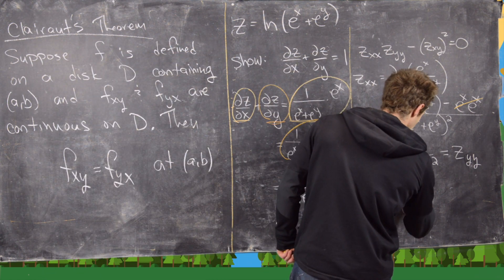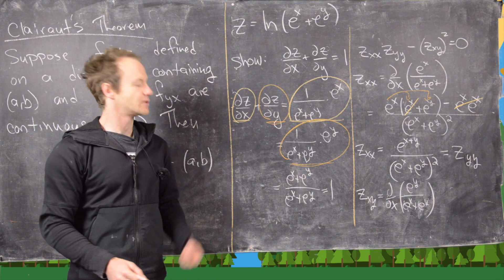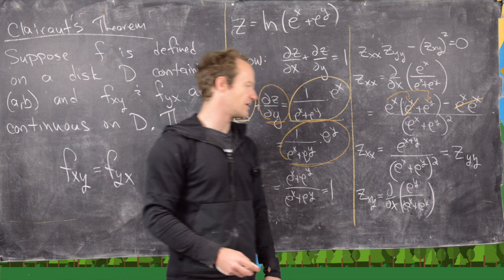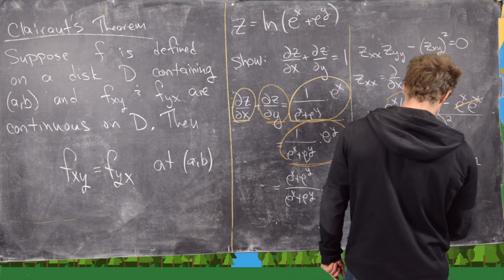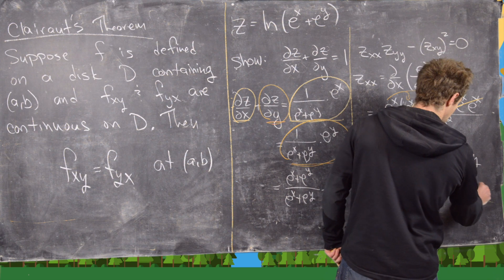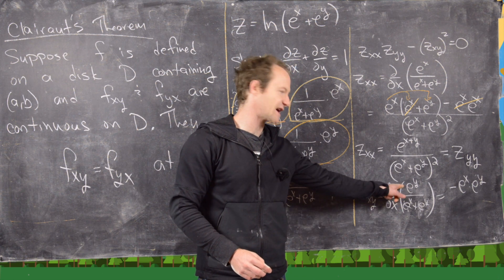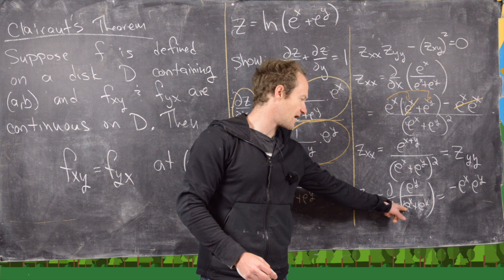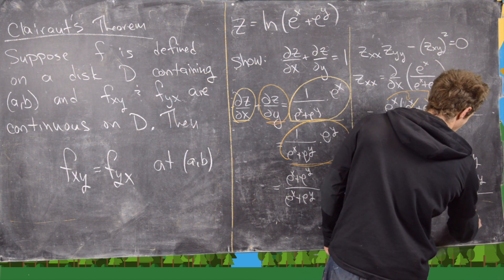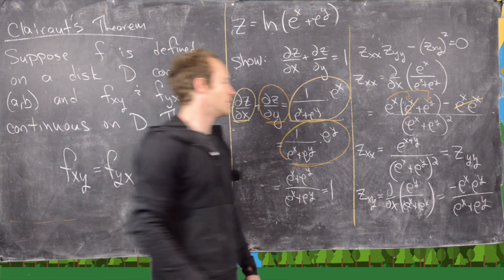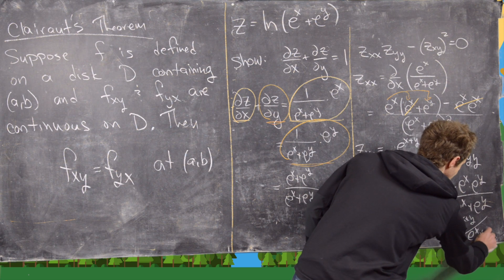We have e^y / (e^x + e^y) and we're taking the partial with respect to x. Using the quotient rule, the derivative of the numerator with respect to x is zero, so we only need the second term: negative the derivative of the denominator (which is e^x) times the numerator e^y, all over (e^x + e^y)². This simplifies to z_xy = −e^(x+y) / (e^x + e^y)².